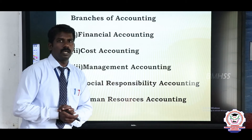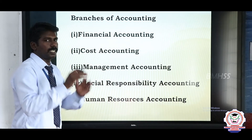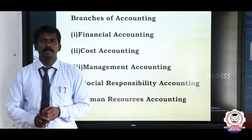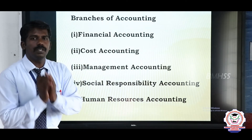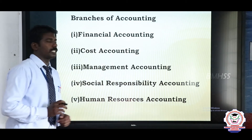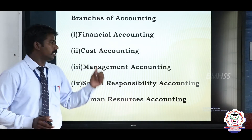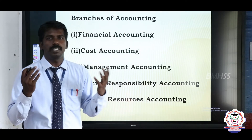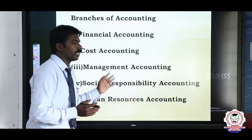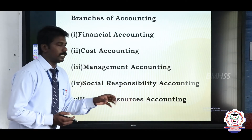Next, branches of accounting. First is financial accounting, which reveals the financial transactions in the business organization. Second is cost accounting — to ascertain the cost of each and every product produced and how to control costs. Third is management accounting, which manages the financial condition of the organization. It is used to take correct, accurate, and favorable decisions in the organization.